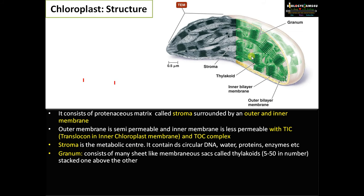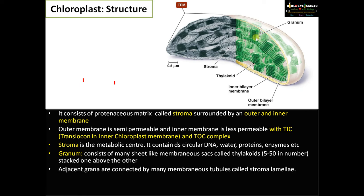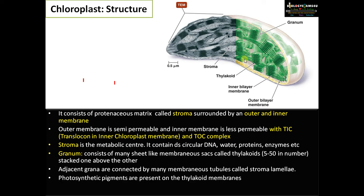The granum is the site of light reactions. It consists of many sac-like structures placed one above the other, called a granum, and the individual units are called thylakoids. Often five to fifty thylakoids are stacked one above the other. Adjacent grana are connected by membranous tubules called stroma lamellae or fret membranes. Photosynthetic pigments are located on the thylakoid membrane, and the space inside the thylakoid sac is called the thylakoid lumen.